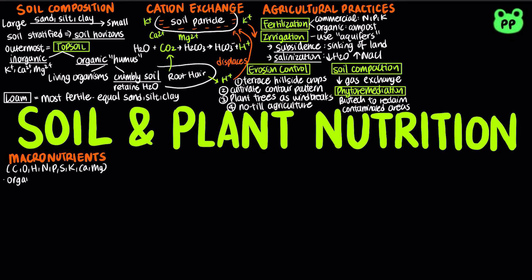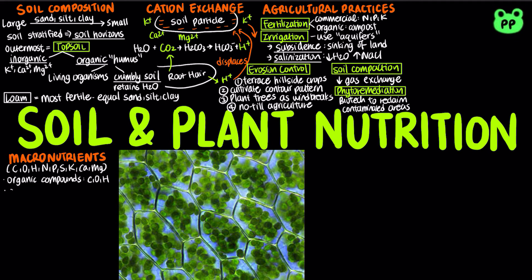Carbon, oxygen, and hydrogen are the major components of plants' organic compounds. Nitrogen and magnesium are the major components of plants' chlorophyll, which functions in photosynthesis.